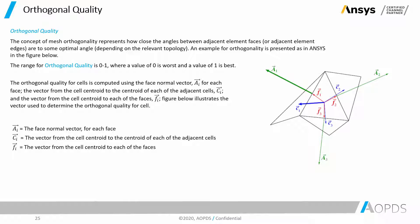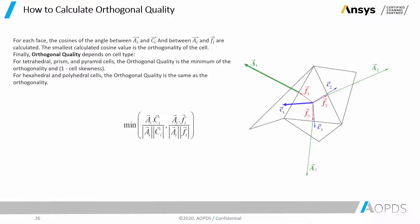Now let's see how we can calculate the orthogonal quality. For each face, the cosines of the angle between AI and CI, and between AI and FI, are calculated. The smallest calculated cosine value is the orthogonality of the cell. Finally, orthogonal quality depends on cell type. For tetrahedra, prism, and pyramid cells, the orthogonal quality is the minimum of the orthogonality and one minus cell skewness. For hexahedral and polyhedral cells, the orthogonal quality is the same as the orthogonality.